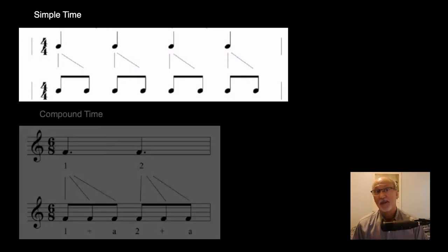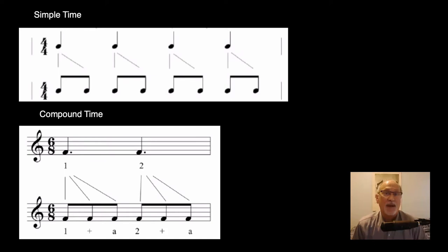And in Chapter 15, we learned that music in compound time divides the beat equally into three parts, as when a dotted quarter note divides equally into 3 eighth notes in 6-8 time.